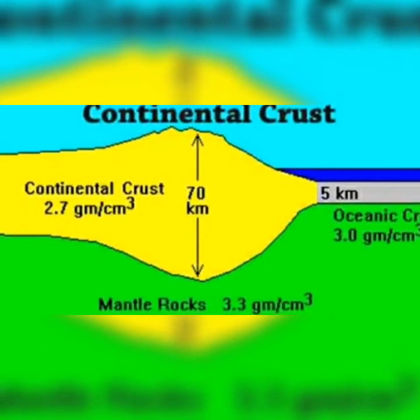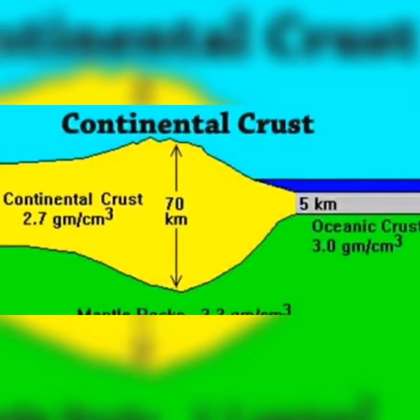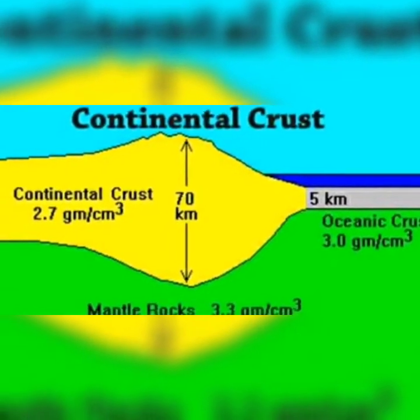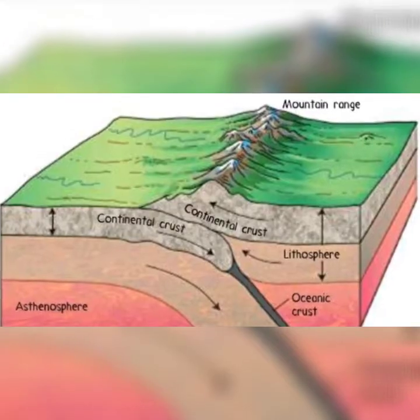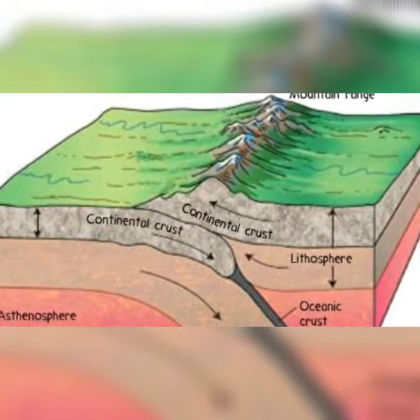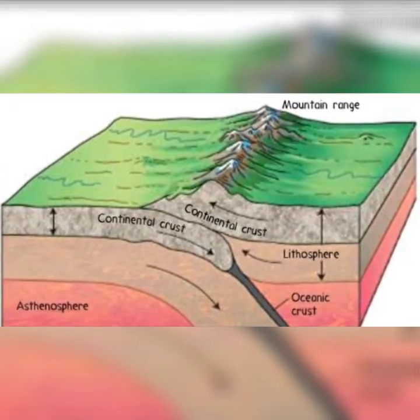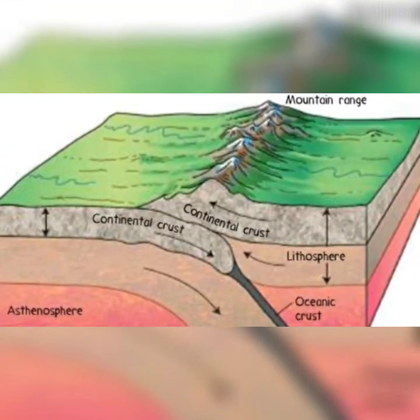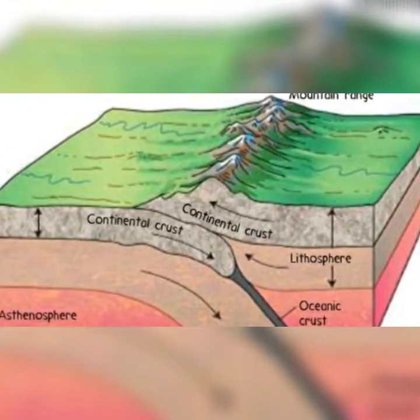The continental crust is sometimes referred to as the upper crust, and the lower crust is sometimes referred to as the oceanic crust.